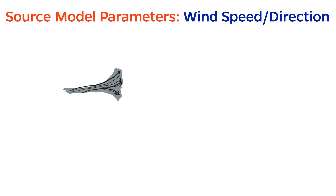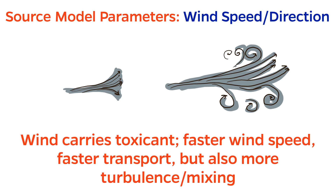Wind speed and direction is another factor, since convection is the primary means of how the toxicant is transported. Interestingly though, fast wind speed isn't necessarily a bad thing. Although it's true that windy conditions will carry a toxicant faster than calm conditions, the increased turbulence of a strong wind can help disperse the toxicant as well.